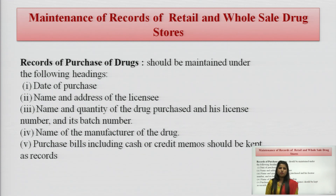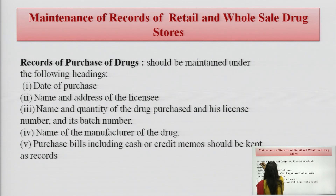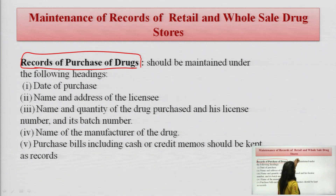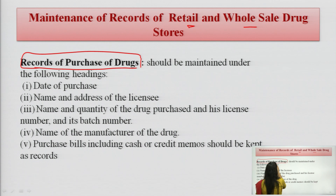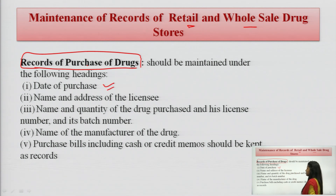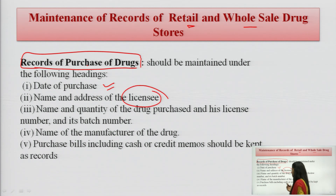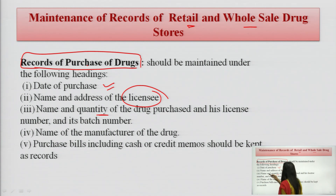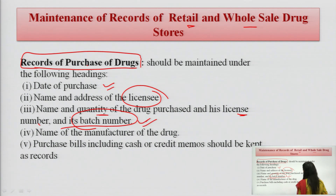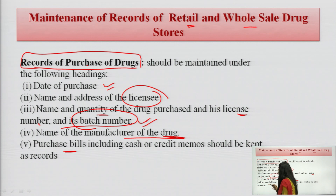For maintenance of records of purchase of drugs in retail or wholesale drug stores, the following should be recorded: date of purchase, license number from which the purchase was made, name of the manufacturer or supplier, name and quantity of the drug purchased, and the batch number. If any problem arises, the batch can be withdrawn. Name of the manufacturer and supplier should be noted, and purchase bills, cash and credit memos, should be kept as records and evidence.